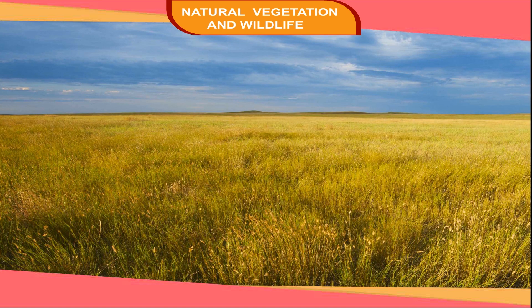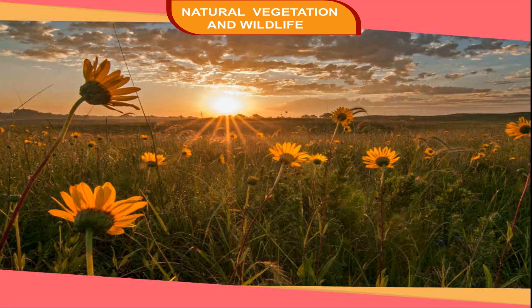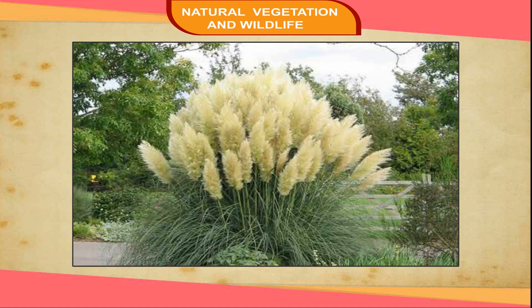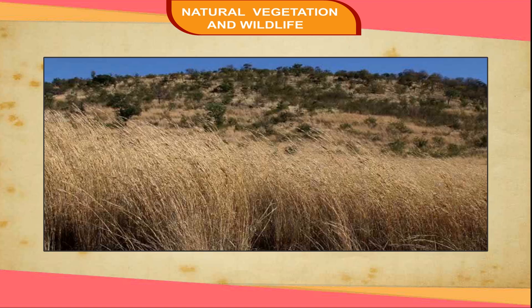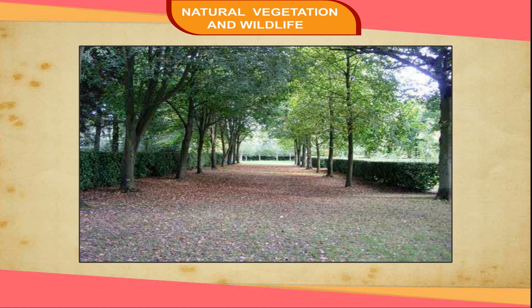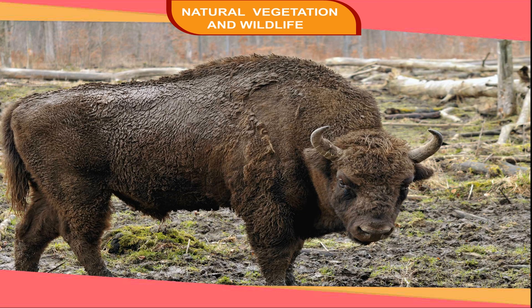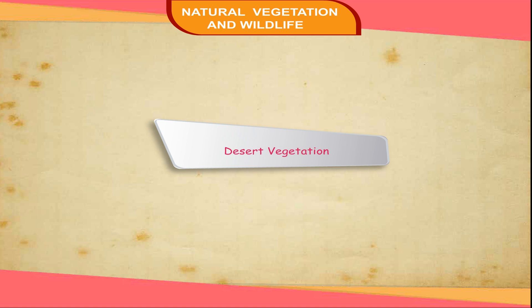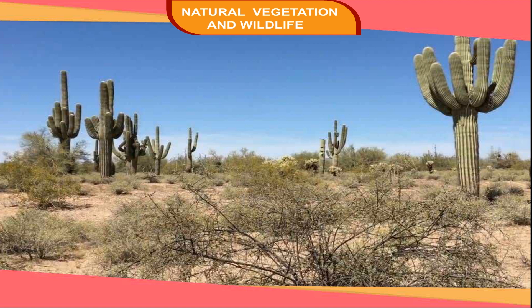Temperate Grasslands. Grasslands are found in the temperate region also, mostly in the interiors of continents. In most continents they have specific names, such as prairies in North America, pampas in South America, steppes in Central Europe, veld in South Africa, and downs in Australia. Wheat and grains are grown on large farms in these regions. As these grasslands are colder and drier, the grasses here are shorter and less dense than those of the tropical grasslands. Trees are almost absent, and wild buffaloes and bisons are common in North America.